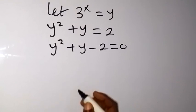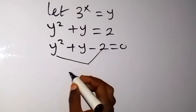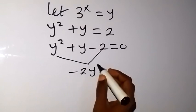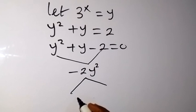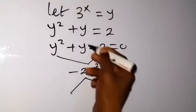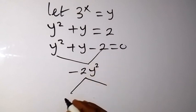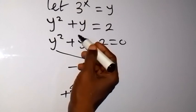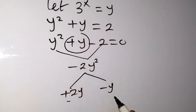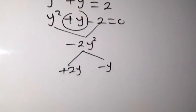We can factorize because multiplying this and this will give us minus 2y squared. Breaking it down into two factors such that we have minus 2y squared and plus y, we can say this will be plus 2y, then minus y, then minus 1. Plus 2y minus y gives us plus y, and times minus 1 gives us minus 2y squared. So we can replace plus y with these two.